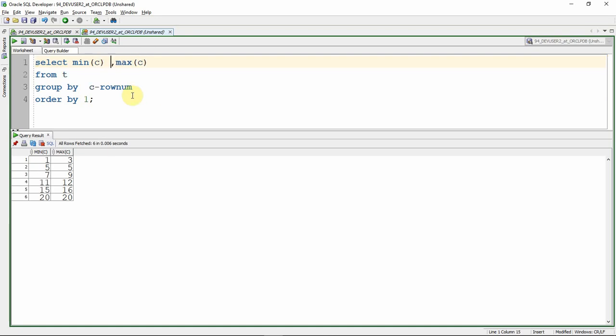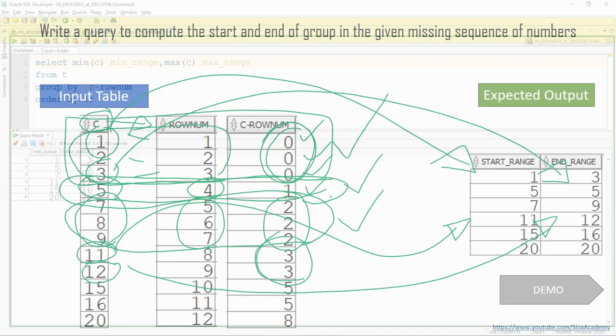So we can even remove that. Let's just give a meaningful alias here. Let's say this is minimum range, maximum range, range value. So it makes more meaningful when we display the output.